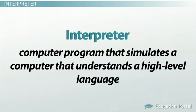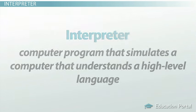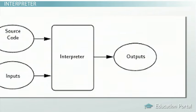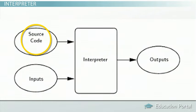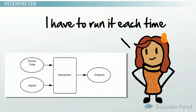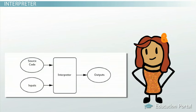An interpreter is a computer program that simulates a computer that understands a high-level language. This means that the interpreter translates the source code line by line during execution. The interpreter executes the code line by line, which results in the desired output data. The only result is the output data — there is no compiled code. When using an interpreter, every time you want to run the program, you need to interpret the code again line by line. There is no compiled code to use if you have multiple inputs that require processing.